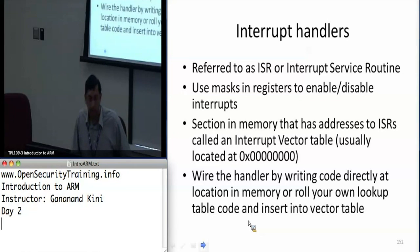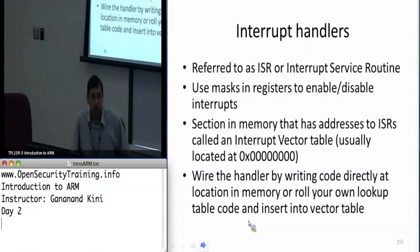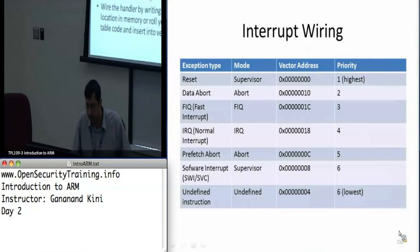The interrupt vector table is normally located at address 0, but you can change that to hex 0xFFFF0000 by setting a bit in the system control register in CP15. You can also wire the handler by directly writing code at that table — generally you'll have one instruction there such as LDR PC, PC plus offset.